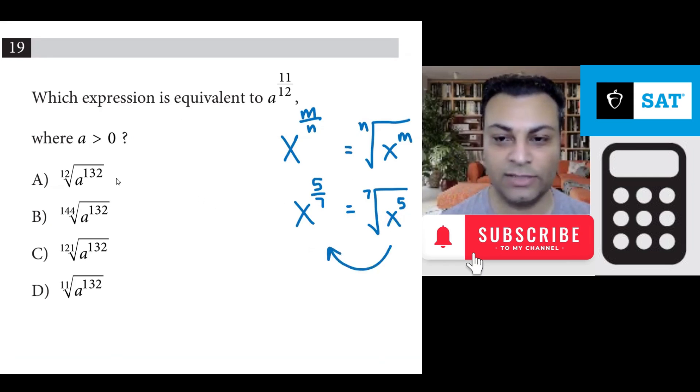So here's what I mean. This can be rewritten as a to the power of 132 over 12. This can be written as a to the power of 132 over 144.